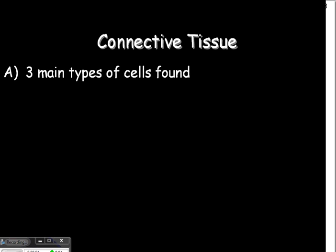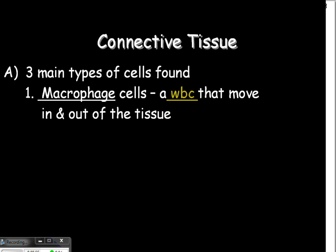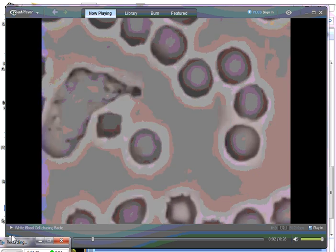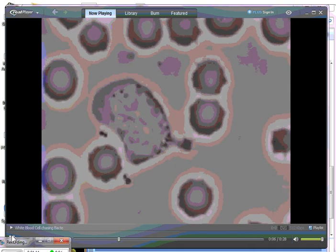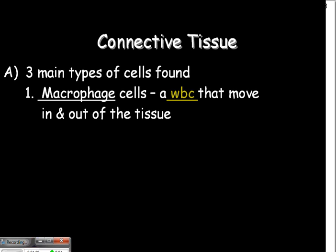There are three main types of cells found within connective tissue. The first is the macrophage cell. This is a white blood cell that moves in and out of the tissue — it doesn't remain there all the time, it just comes in when it's needed. That video showed a white blood cell with red blood cells and platelets actually attacking a bacteria, which is an example of a macrophage cell.